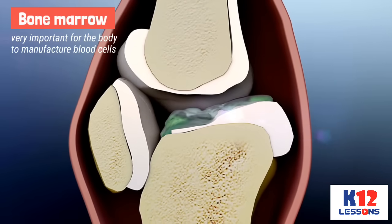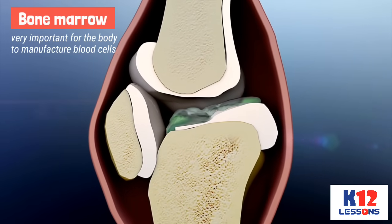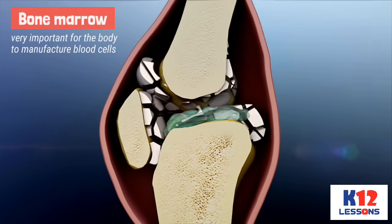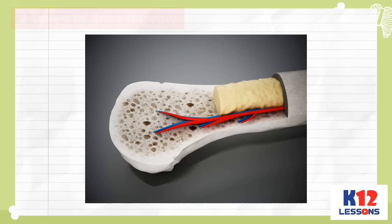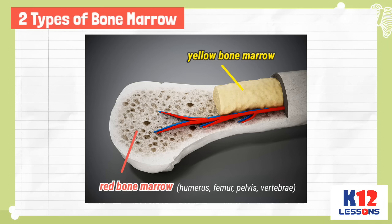Inside the bones are bone marrows, which are very important for the body to manufacture blood cells. Bone marrows are of two types: the red bone marrow and the yellow bone marrow. The red bone marrow is found in the humerus, femur, pelvis, and vertebrae, while the yellow bone marrow is found in many other bones.